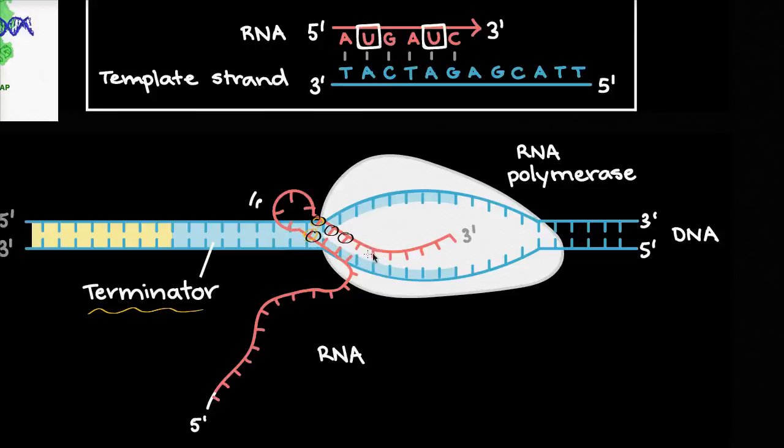Now if we're talking about a prokaryote, we're done. We would have formed, this would be our messenger RNA, which then can go to a ribosome, and then be translated into a protein.